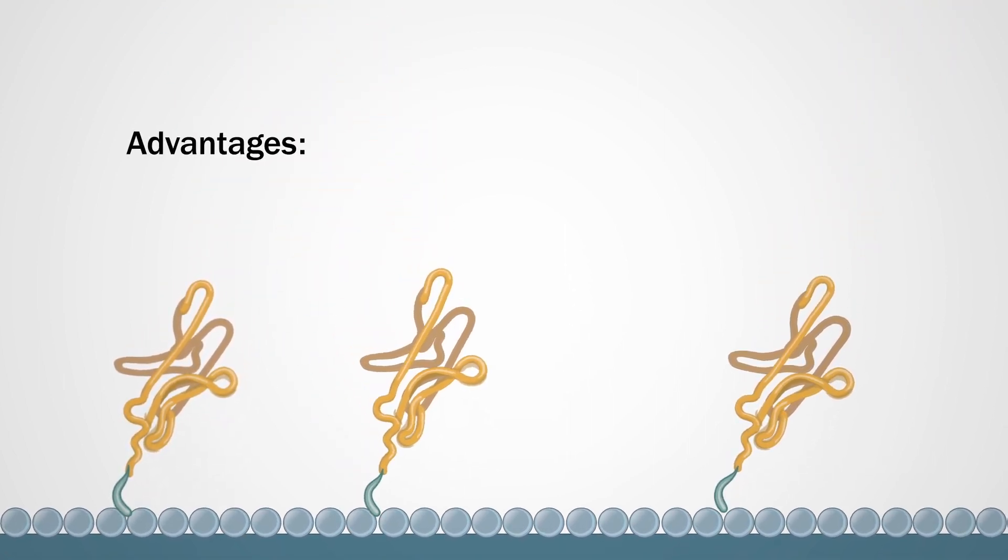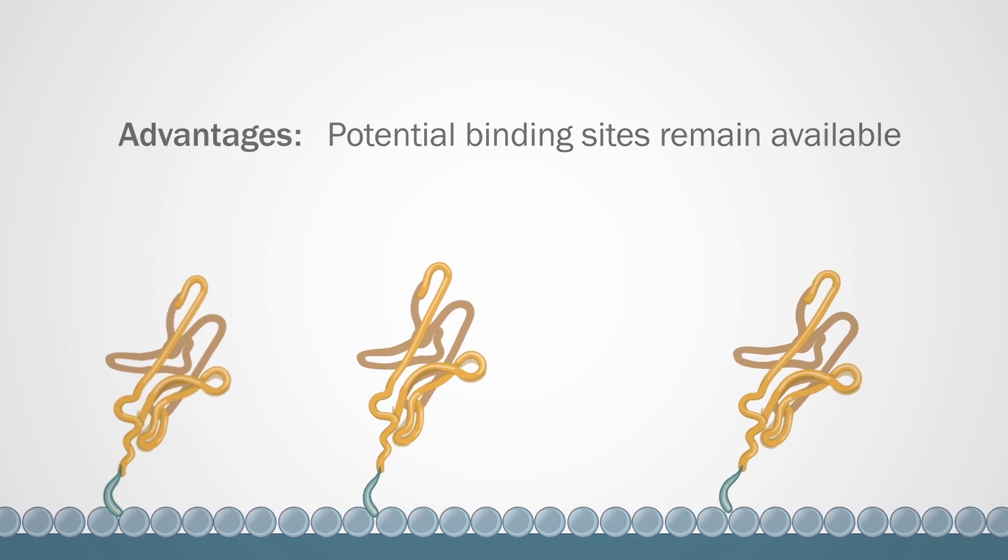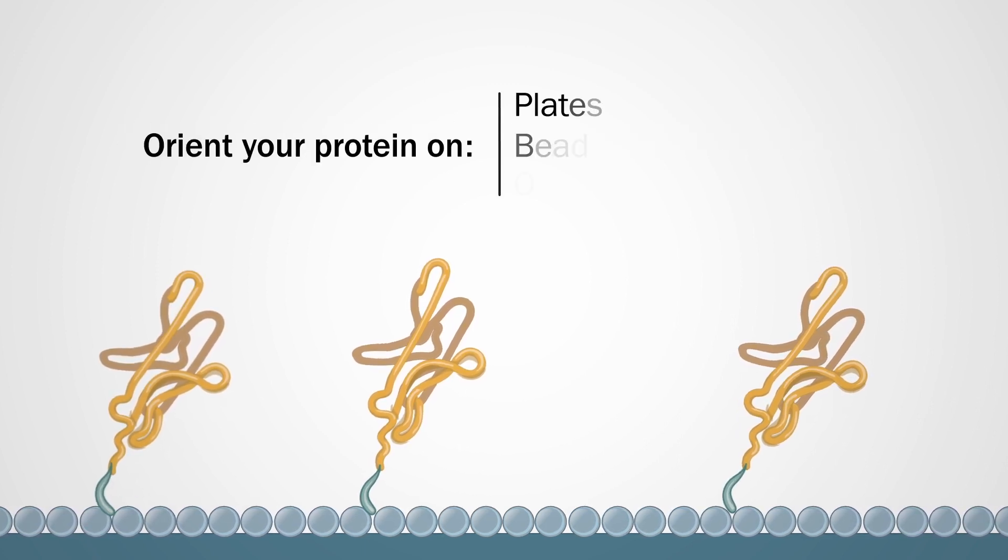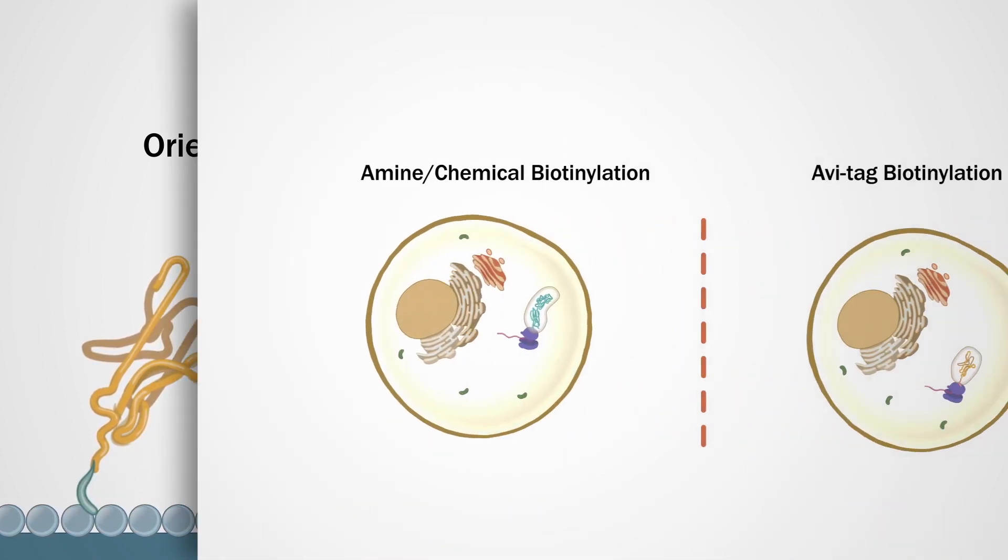Advantages of controlled biotinylation: potential binding sites remain available. Specifically orient your protein on plates, beads, and other selected surfaces.